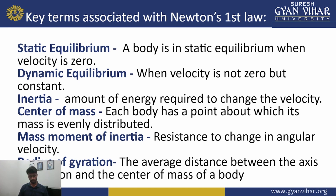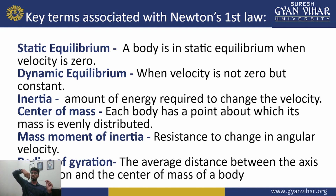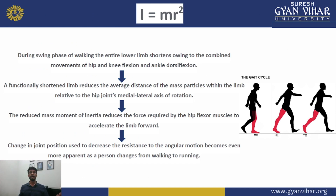Consider a lever with a fulcrum point and a box placed on it. The box has a center of mass at a certain point, and the distance between that center of mass and the fulcrum is the radius of gyration. The formula for inertia is I = mr², where m is mass and r is the radius of gyration. Inertia is directly proportional to the square of the radius of gyration — so if the radius of gyration increases by 2, inertia increases by 4; if it increases by 3, inertia increases by 9.